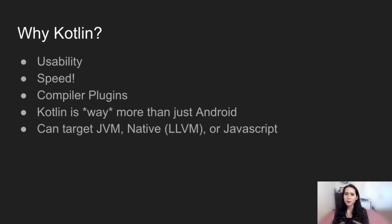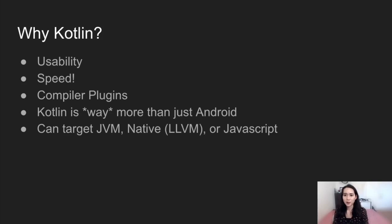So why Kotlin? We decided on Kotlin because it's easy to use, memory safe, type safe, and it has functional constructs. It's extensible via compiler plugins and it's performant. Kotlin is a JVM language, which means it can be anywhere from half the speed of C++ to sometimes faster than C++, and of course orders of magnitude faster than Python.